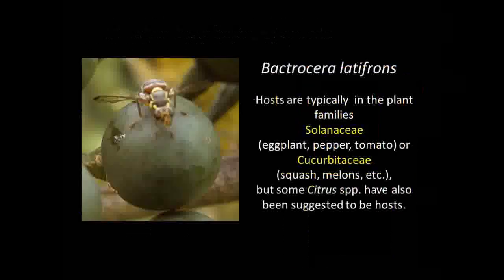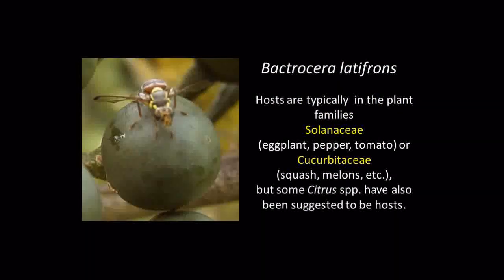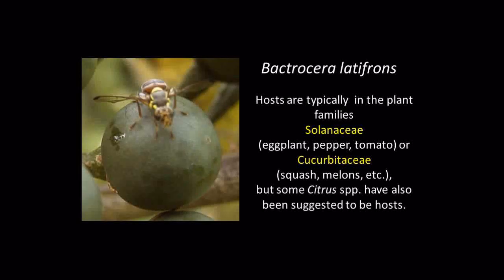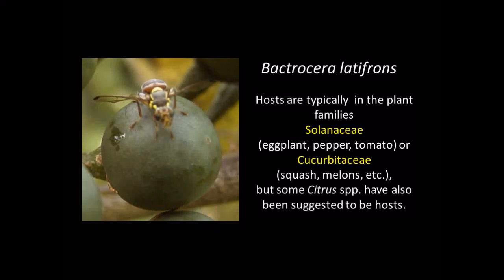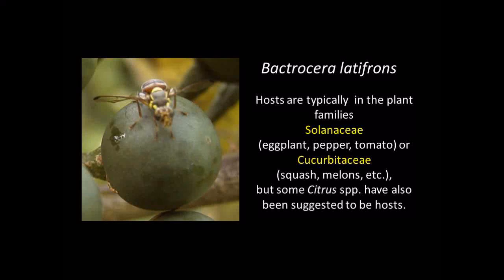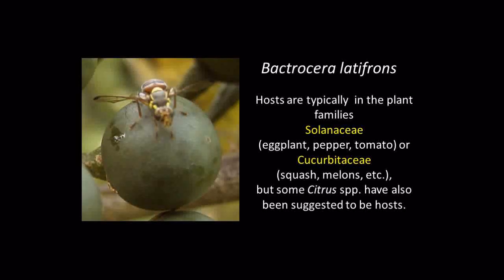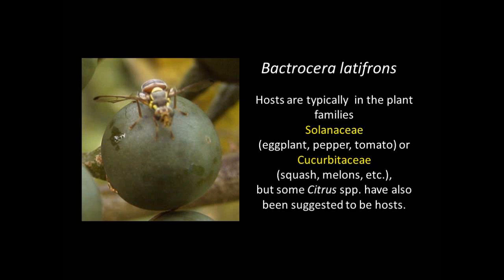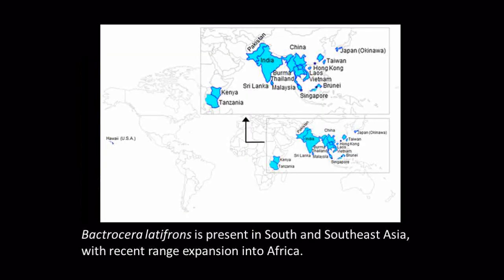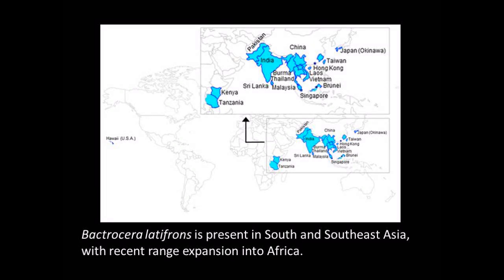The host fruits of Bactrocera latifrons are most commonly in the plant family Solanaceae, which includes plants such as eggplant, pepper, and tomato, or in the plant family Cucurbitaceae, which includes plants such as squashes and melons. There are, though, several citrus species, family Rutaceae, which have been suggested to be hosts of Bactrocera latifrons. Bactrocera latifrons is present in South and Southeast Asia, but has expanded its range to Hawaii and also into Africa in the countries of Kenya and Tanzania.